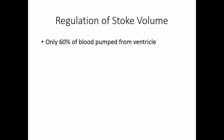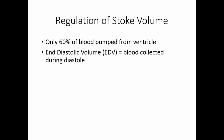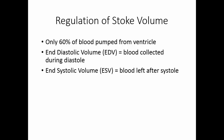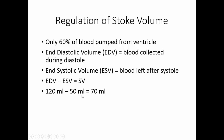Only about 60% of the blood is pumped from the ventricle at each contraction. The end diastolic volume is the amount of blood collected in the ventricle while it is relaxed. The end systolic volume is the amount of blood left after contraction — no matter how firmly the ventricle contracts, there is always some blood left. Subtracting end systolic volume from end diastolic volume gives the stroke volume. A ventricle holds about 120 milliliters, and about 50 milliliters is left behind after contraction, which is why stroke volume is about 70 milliliters. End diastolic volume, end systolic volume, and stroke volume are controlled by three things: preload, contractility, and afterload.